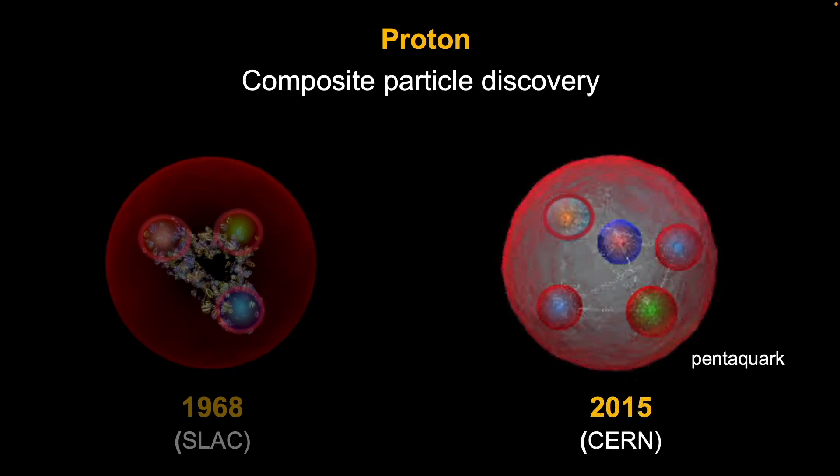Fast forward another half century to the discovery of the pentaquark in 2015. With one antiquark and four quarks, this is possibly the true structure of the proton, because today's higher energy experiments separate all the components. At lower energies, the antiquark would cancel with one quark, thus the appearance of only three quarks.